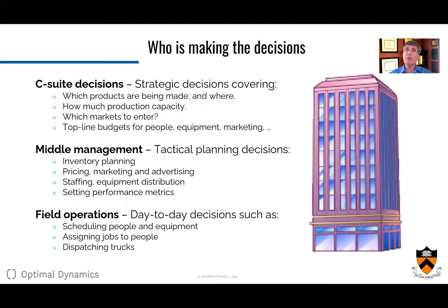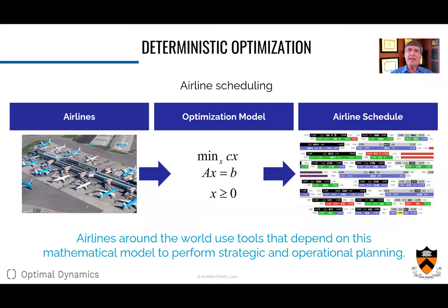Don't forget about the different levels at which decisions are made. We've got C-suite decisions, typically strategic; middle management decisions — planning inventory, staffing, setting performance metrics; and field operations such as day-to-day execution decisions, assigning jobs to people, dispatching trucks. Take the classic optimization problem of airline scheduling. People trained in linear programming and integer programming can translate the problem into mathematics, and out comes an airline schedule. This became very popular in the 1990s, and there are standard software packages that produce these. You can have low-dimensional decisions like planning a path from A to B, or higher-dimensional decisions like where to locate a facility.